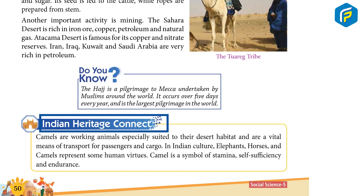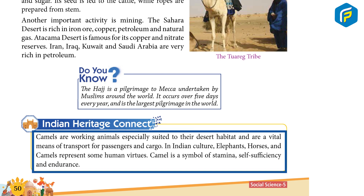Indian Heritage Connects: Camels are walking animals specially suited to their desert habitat and are vital means of transport for passengers and cargo. In Indian culture, elephants, horses, and camels represent some human virtues. The camel is a symbol of stamina, self-sufficiency, and endurance.